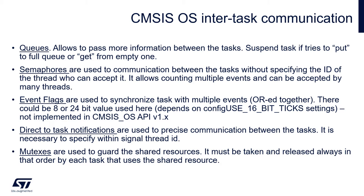A queue allows you to pass information between tasks — to pass a bit more information than just ON or OFF. It can be a structure, it can be any type of information, it can be a pointer. The queues and operations on queues may block the tasks while they are trying to put something to the queue or get something from an empty queue. So it is an important mechanism as well to manipulate tasks and block them when they are requesting more information.